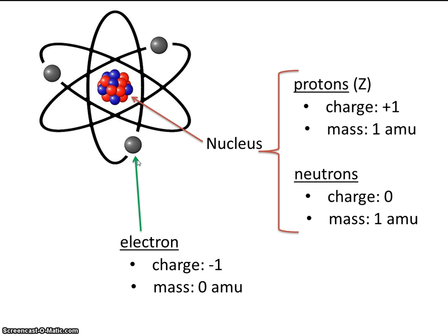So let's do a quick review. There's three subatomic particles: protons and neutrons, and also electrons. Protons and neutrons are found in the nucleus. They both have a mass of one.